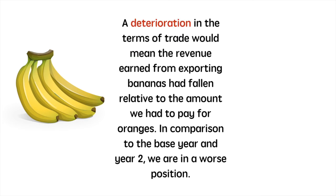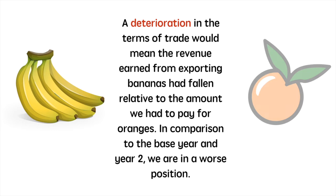A worsening in the terms of trade would mean the revenue earned from exporting bananas had fallen relative to the amount we had to pay for oranges. In comparison to the base year and year 2, we are in a worse position. This is because the revenue earned from selling one unit of bananas now only allows us to purchase one unit of oranges.